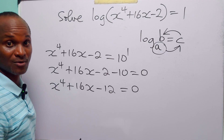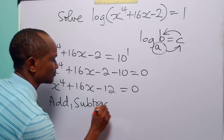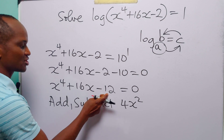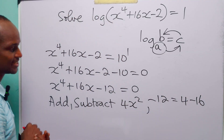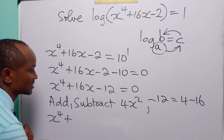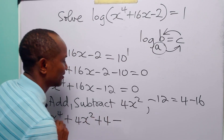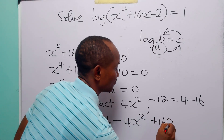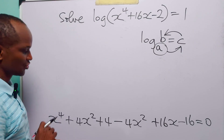To do that, let us add and subtract 4x squared to the left-hand side of this equation, and then let us break down minus 12 into 4 minus 16. When we do this, we have x to the power 4 plus 4x squared plus 4, minus 4x squared plus 16x minus 16, equal to 0.